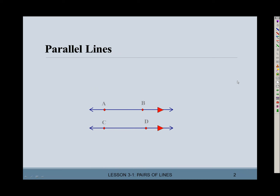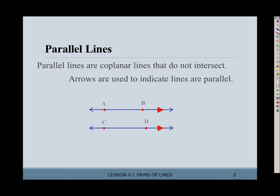So what are parallel lines? They're lines that are co-planar and do not intersect, just like railroad tracks or the double yellow line in the middle of the road. You use arrows to indicate that lines are parallel — these red arrows here mean that the lines are parallel.